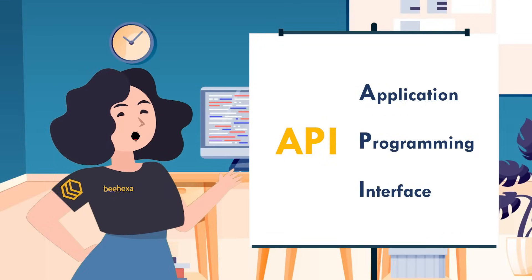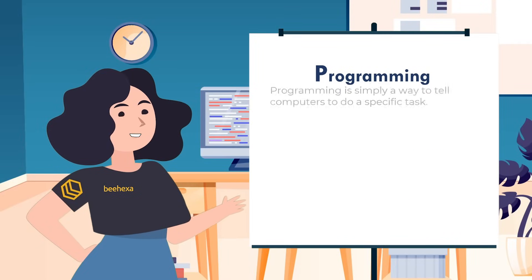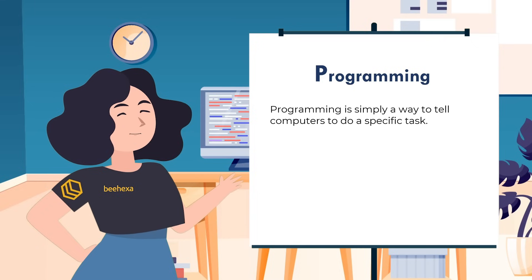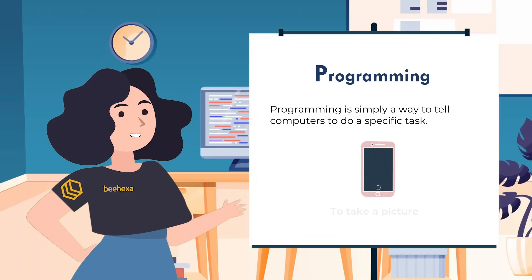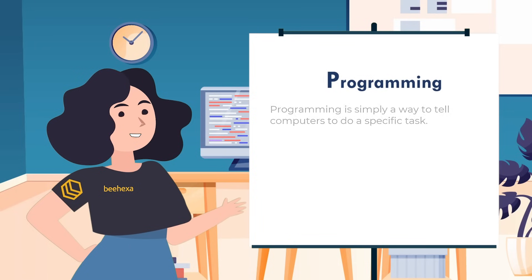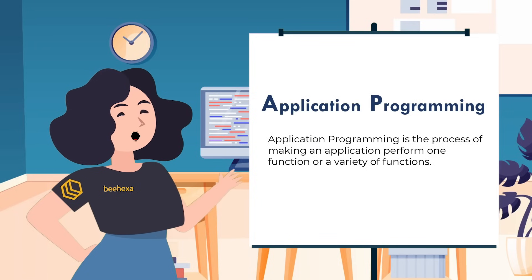We will finish by clarifying the remaining P in the API acronym: programming. Programming is simply a way to tell computers to do a specific task, such as to turn on a song, to take a picture with your smartphone, or to build up a complex financial accounting report. So, application programming is the process of making an application perform one function or a variety of functions.